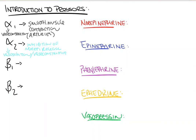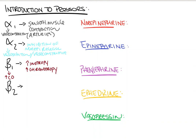Beta-1 receptors are located primarily on the heart. Activation of beta-1 receptors leads to increased inotropy — or strength of heart contraction — and increased chronotropy, meaning the frequency or speed at which the heart contracts. So it increases your heart rate and its overall strength of squeeze, leading to an increase in your cardiac output.